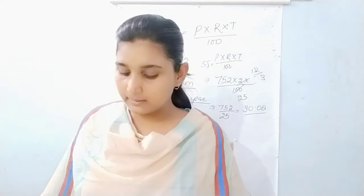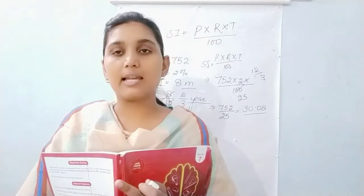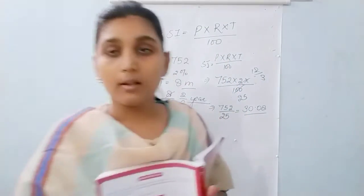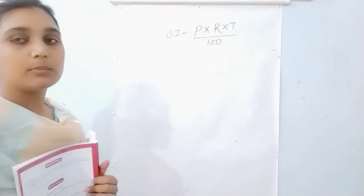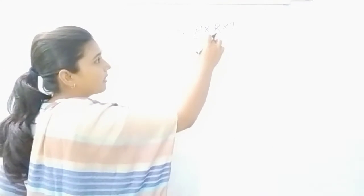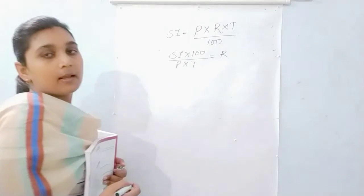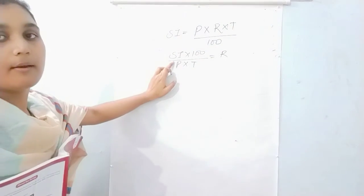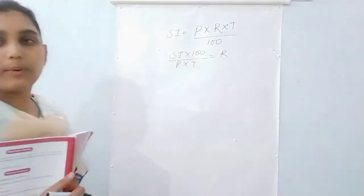Now the next question is question number 3: at what rate percent per annum is the simple interest Rs.1000 in 2 years when principal is Rs.1500? Aapko rate percent nikalna hai, whereas SI is given, principal is given, and time is also given. You just manipulate the formula: Rate equals SI multiplied by 100 upon P multiplied by T. SI diya gaya hai 1000, principle diya gaya hai 1500, time diya gaya hai 2 years. Very easy question, you can do it.